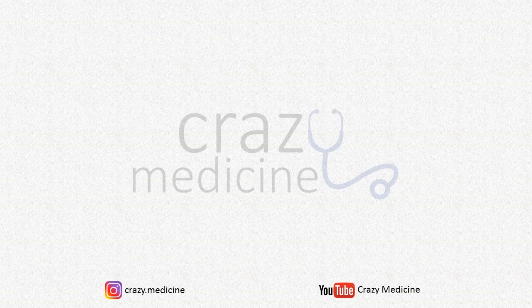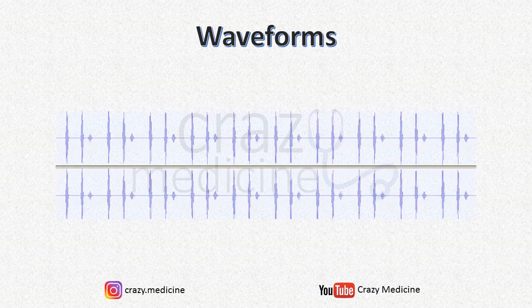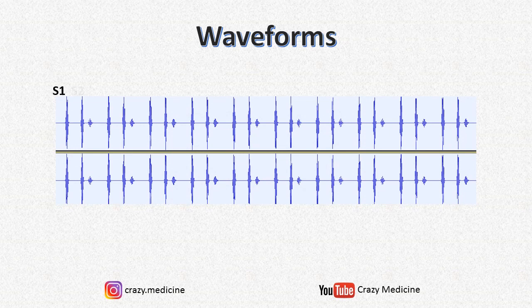Before playing the sounds, have a look at the waveforms of S3 and S4, as we did in our previous video. The first waveform is for understanding S3. This wave is S1, next is S2, and just after S2 — in the rapid filling phase of ventricular diastole — the third wave is for S3. Now with this waveform in mind, listen to the S3 gallop.